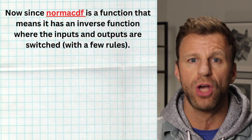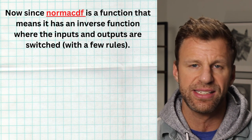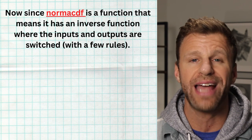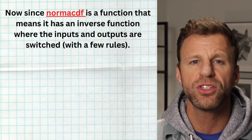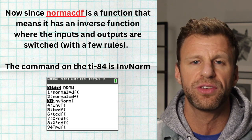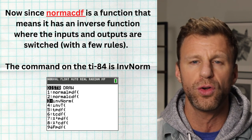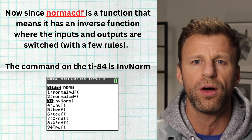Since normal CDF is a function, that means it has an inverse function where the inputs and outputs are switched. How do we access this inverse function for the normal distribution? It's right underneath normal CDF on your TI-84 calculator. If you hit second VARS, you'll see that list of commands, and right underneath normal CDF is the command invNorm. This is the inverse function for the normal model.